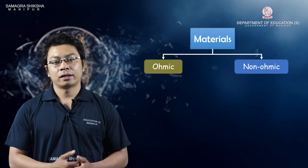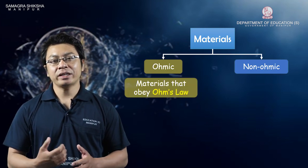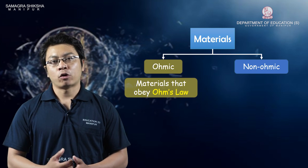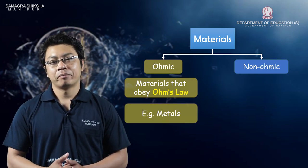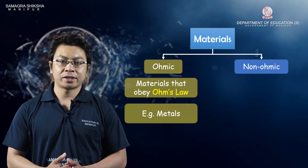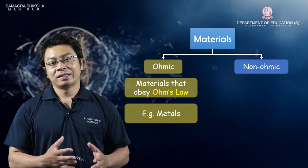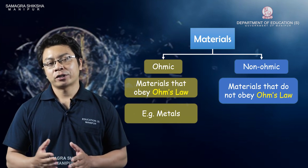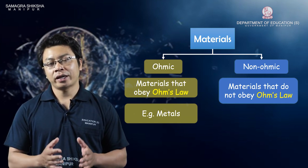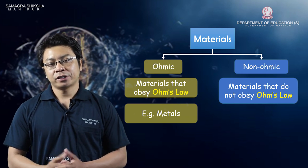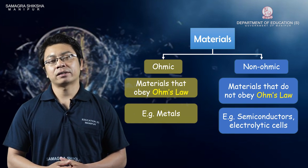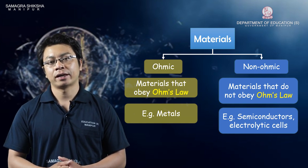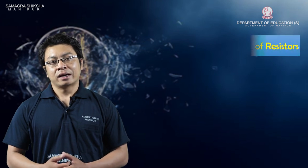There are ohmic substances and non-ohmic substances. Ohmic substances obey Ohm's law — for example, metals like copper and aluminum are ohmic substances. Non-ohmic substances do not follow a linear relationship between current and potential difference. For example, semiconductor devices are non-ohmic substances. These are called non-ohmic substances.